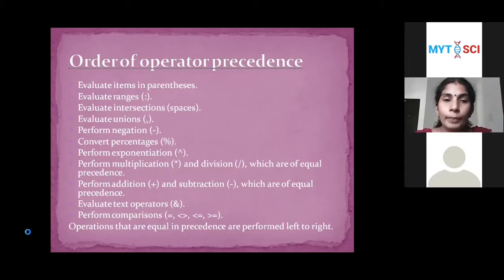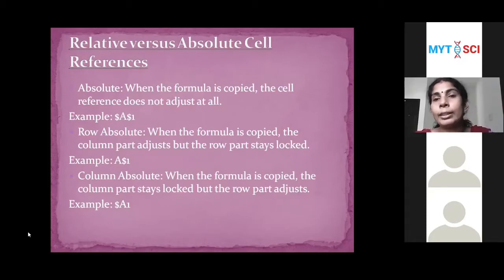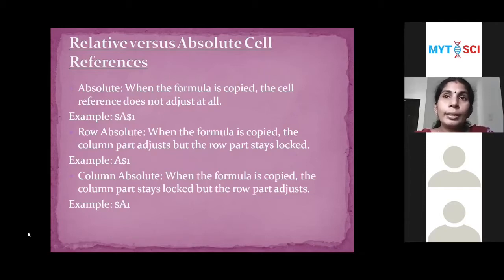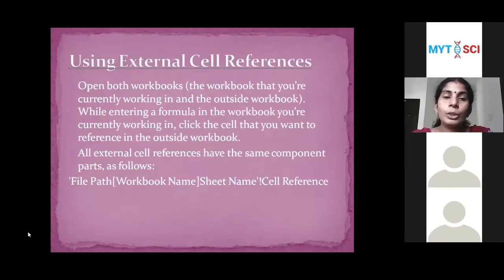Next is relative versus absolute cell references. When you use Excel formulas, if a constant value is in a specified cell and you copy the formula to adjacent cells, it will affect the whole formula. To avoid that, we use absolute cell references. We can also use external cell references — that is, we can reference two Excel sheets at a time within formulas.